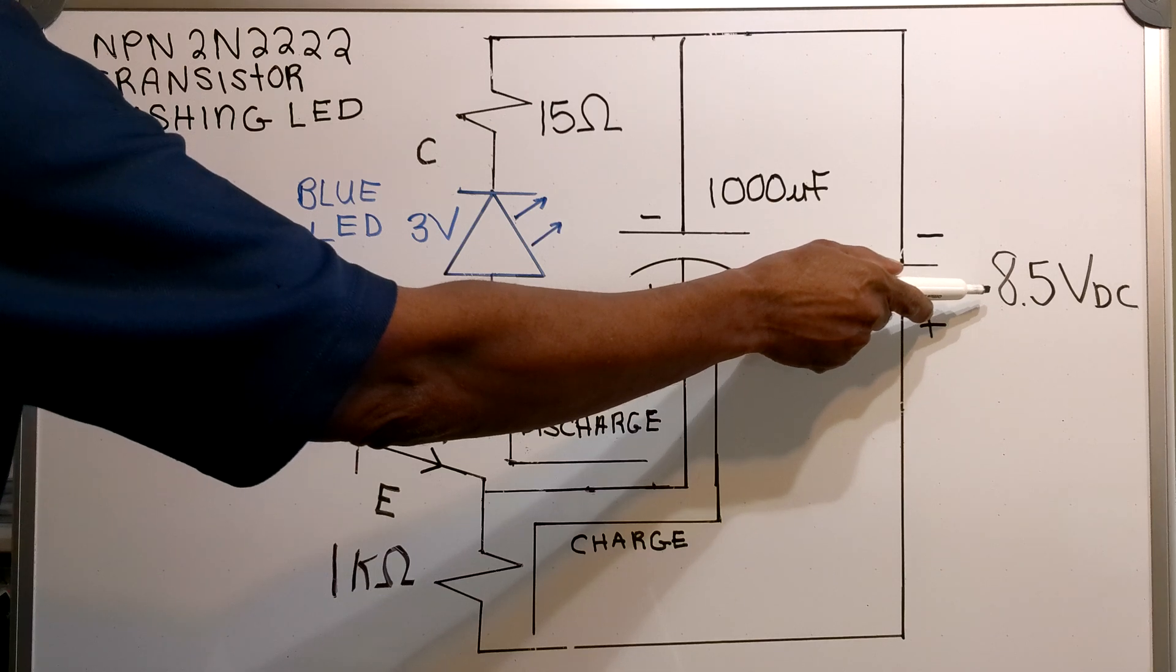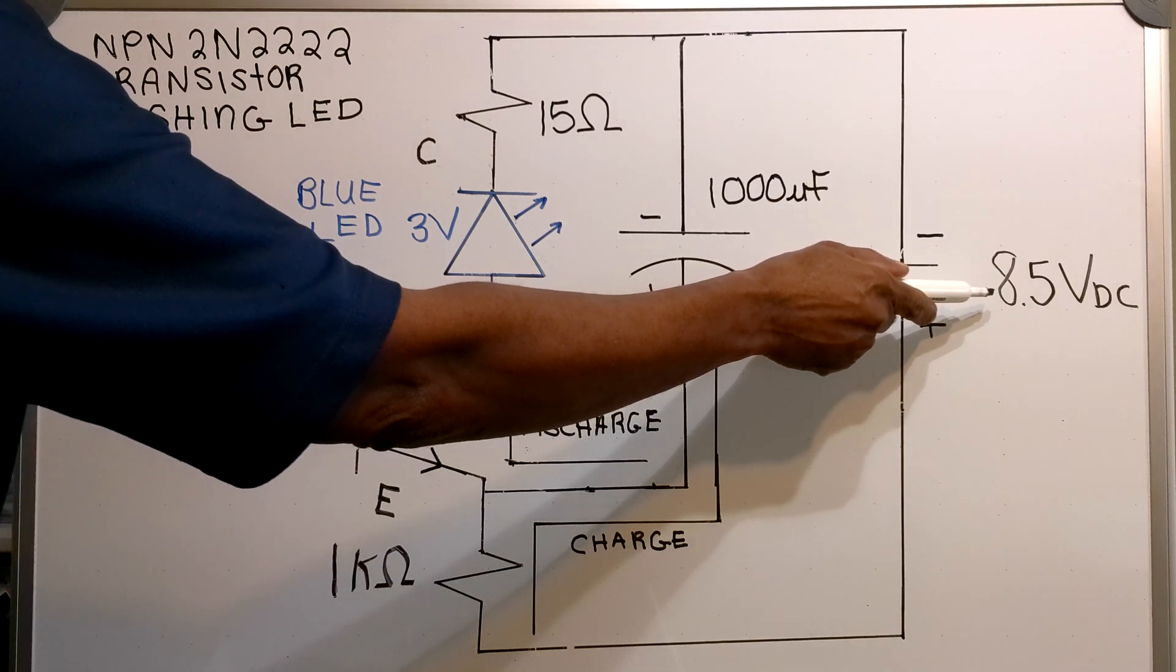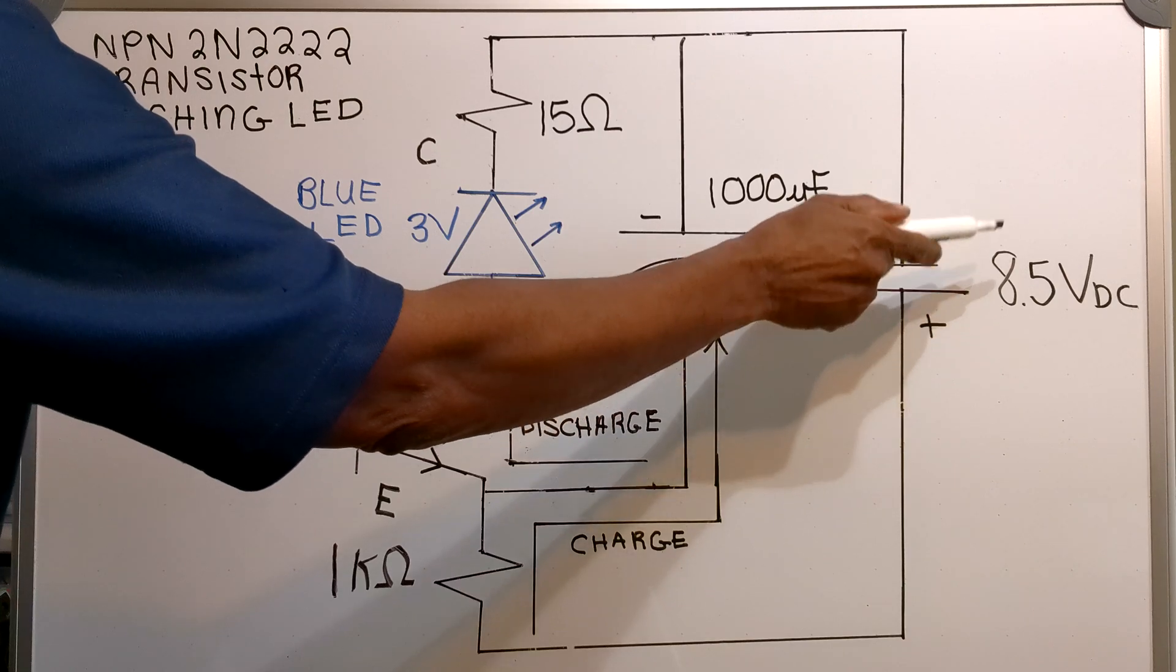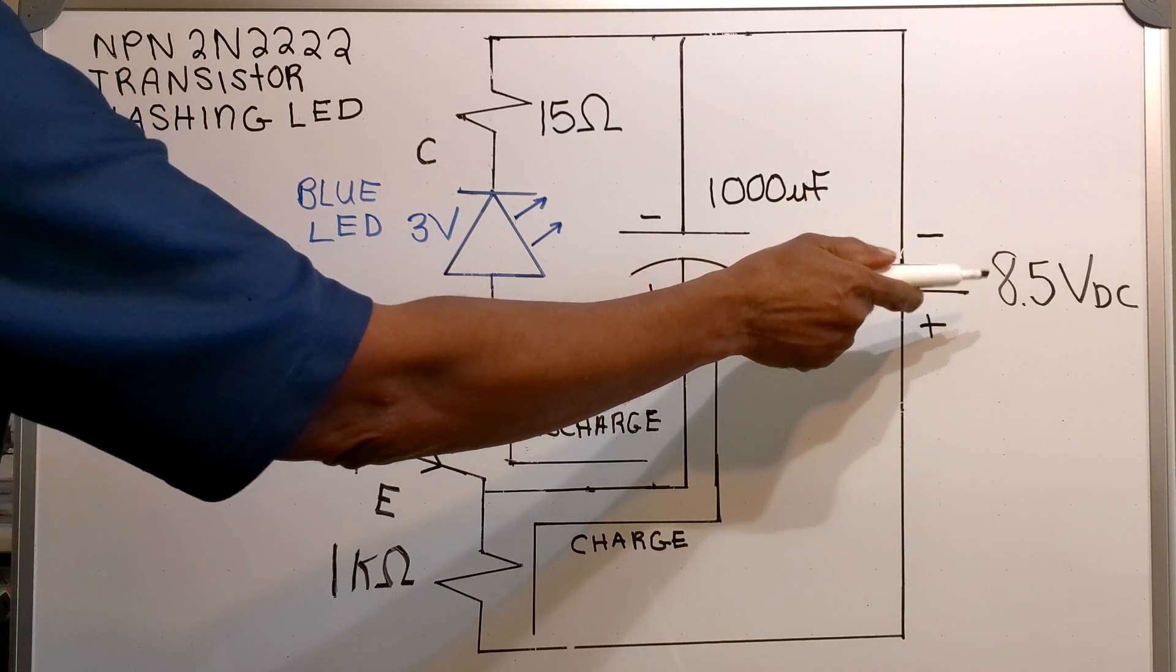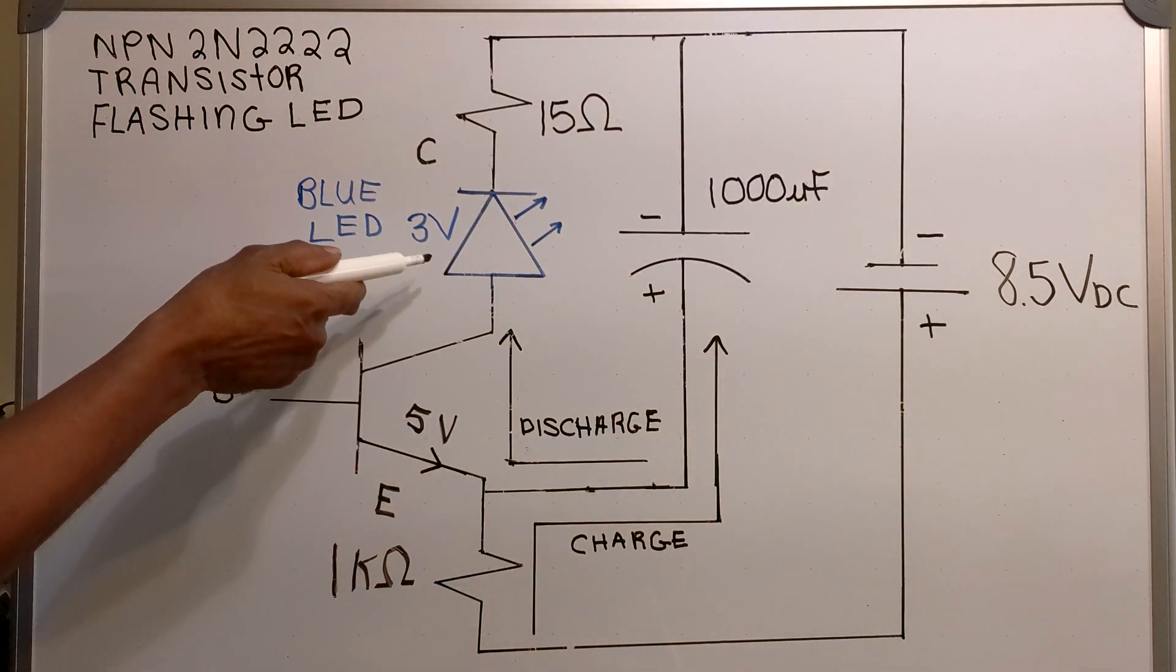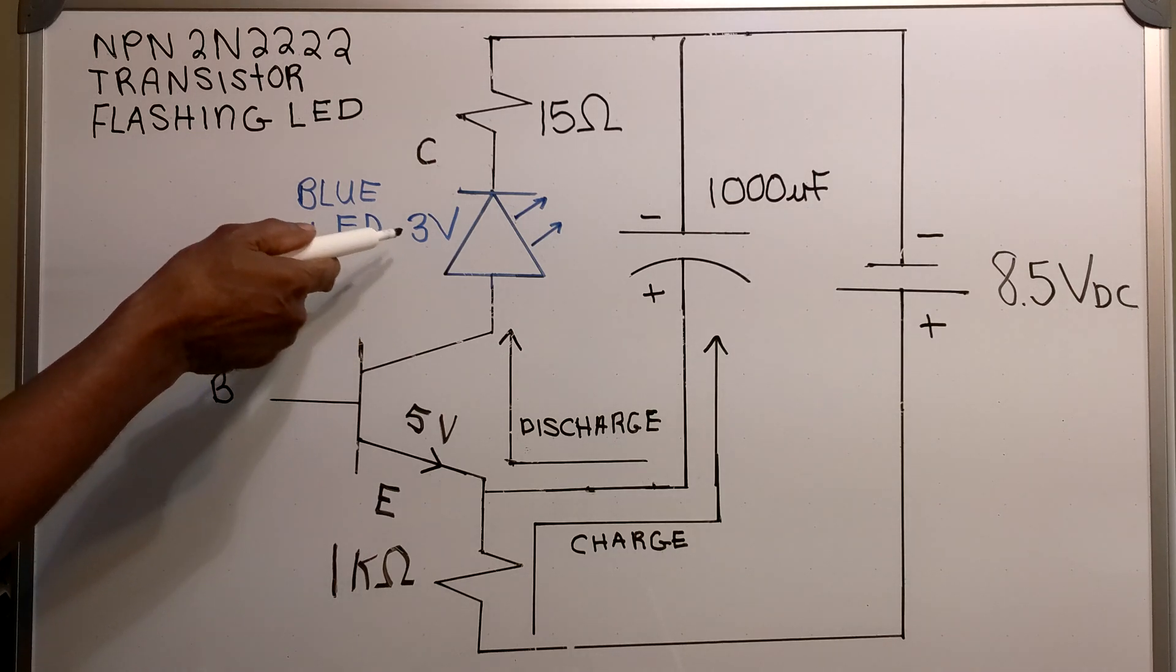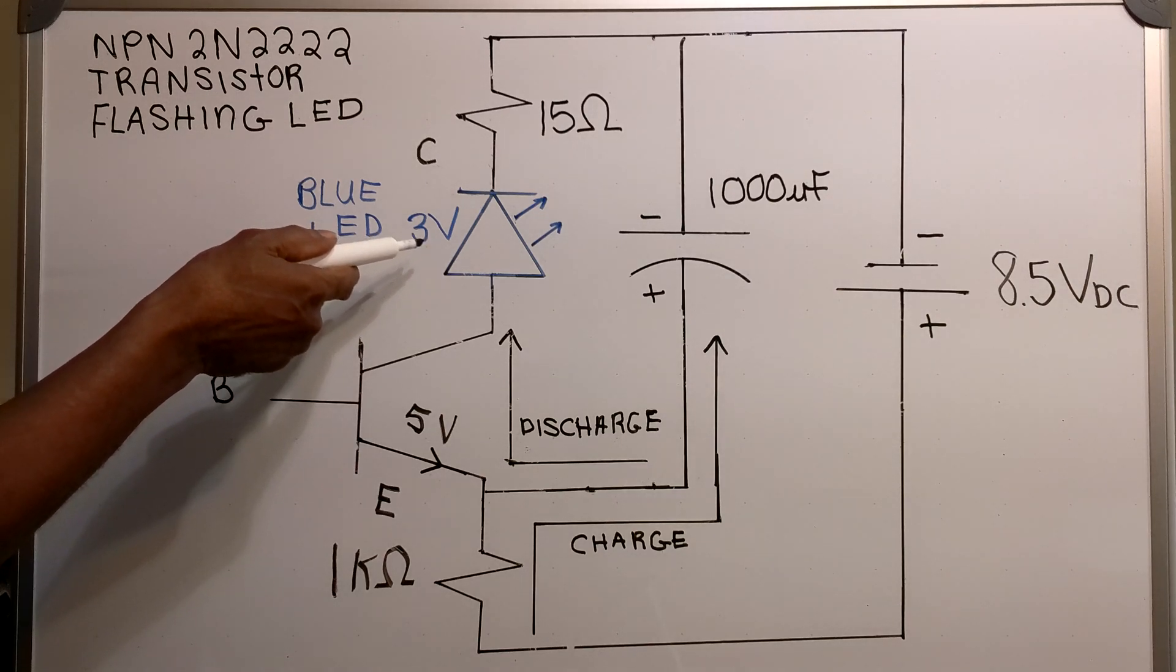This voltage should be the minimum voltage of your circuit. With this voltage and this particular LED which has a 3 volt voltage drop, you will be getting a moderate blink.